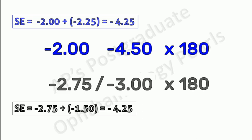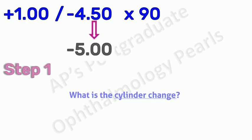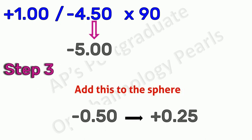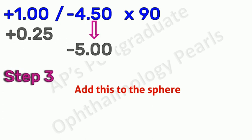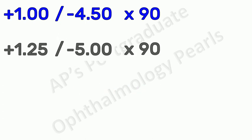One last example. Here, let us say we need a cylinder of minus 5. Step 1: what is the change in cylinder? It is minus 0.5. Step 2: halving minus 0.5 and changing the sign, we get plus 0.25. Step 3: adding this to plus 1, we get plus 1 plus 0.25, that is plus 1.25.